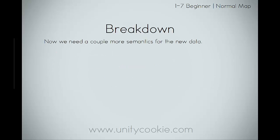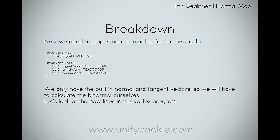We need a couple more semantics for the new data. We only have the built-in normal and tangent vectors, so we'll have to calculate the binormal ourselves. We'll need to grab in the tangent and output the tangent, the normal, and the binormal to the fragment shader. So by default we have normal and tangent, but we'll need to calculate that binormal.